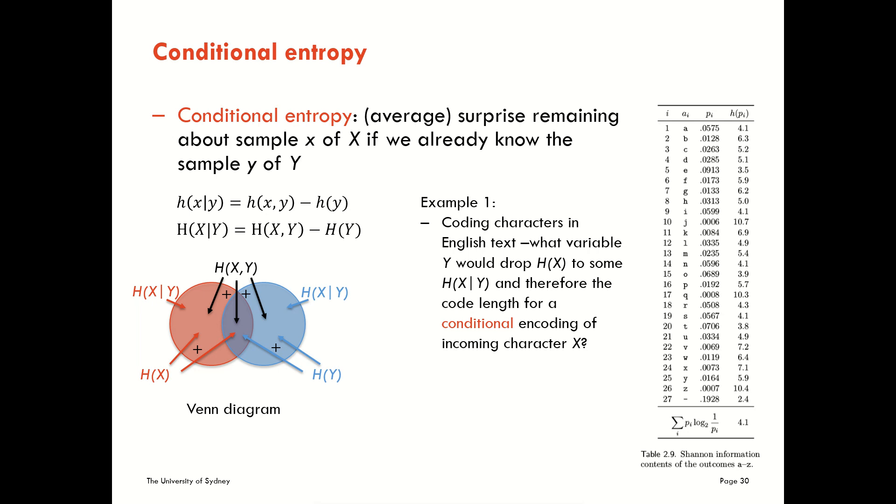To take an example here coming back to looking at coding characters in English text, to ask the question what is an example of a variable Y that would drop the uncertainty of a variable X to some other conditional entropy and therefore also drop the code length for a conditional encoding of an incoming character. We talked earlier about thinking about entropy as a code length. We can also think about conditional code lengths. What if our receiver already knows something that we know? Can we save some code by using that knowledge in the coding scheme?